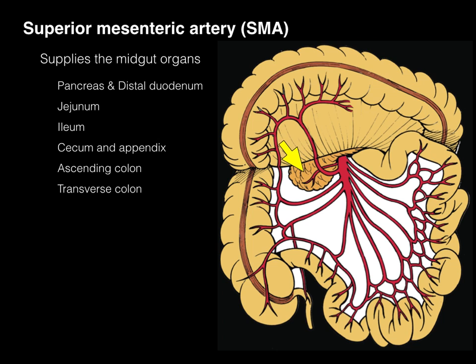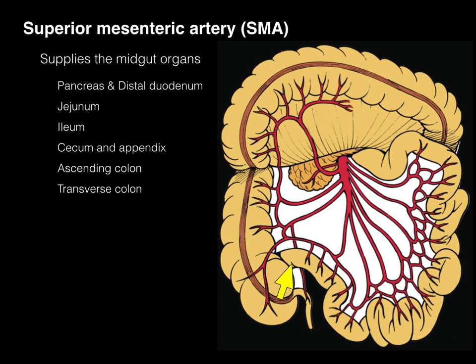The pancreas is illustrated but the duodenum is not shown. The SMA also supplies the jejunum, which is the more proximal part of the small intestine, and the ileum, the more distal part. It also supplies the cecum and appendix, ascending colon, and finally somewhere halfway to two-thirds of the way across the transverse colon.